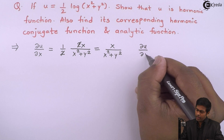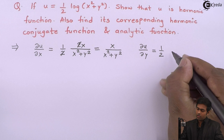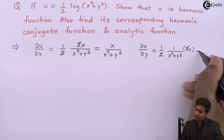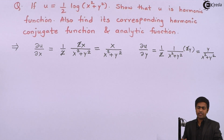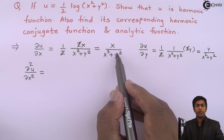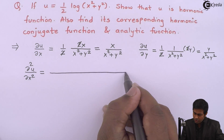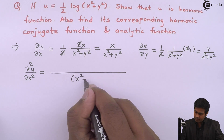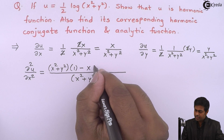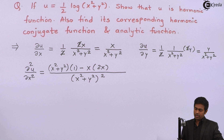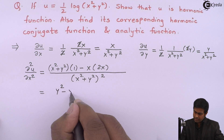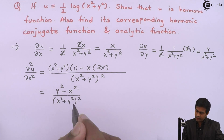Similarly, if we find ∂u/∂y, we get 1/2 times 1/(x² + y²) into 2y. The 2 and 2 cancel, so we get y/(x² + y²). Next, for ∂²u/∂x², we differentiate ∂u/∂x with respect to x again. By the u/v rule of differentiation, we get (x² + y²)² in the denominator. In the numerator: (x² + y²)·1 − x·2x, giving y² − x² in the numerator and (x² + y²)² in the denominator.